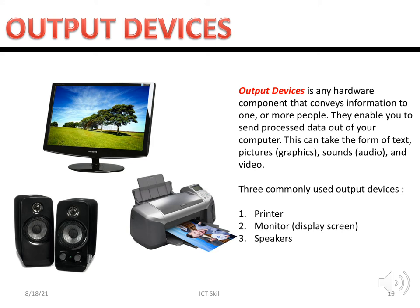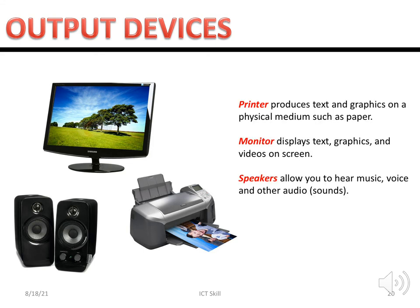It's worth noting that some monitors can also be categorized as both input and output devices, because some screens can be used as touch screens — for example, a tablet PC, iPad, or your smartphone. So those screens serve as both input and output devices. The output device examples include printer, monitor, and speaker.